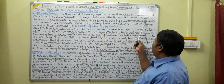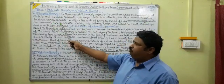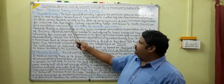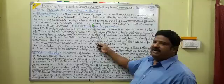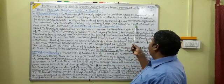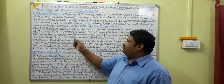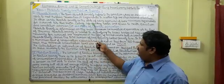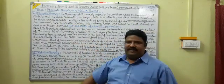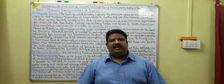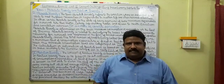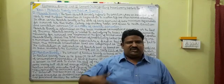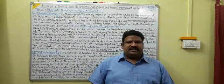Absolute poverty is the state of being deprived of bare minimum requirements for survival, like food, shelter - meaning housing facilities - clothing, safe clean drinking water, and access to health, education, and sanitation services. All these commodities and services are very much essential for the normal living of any person.